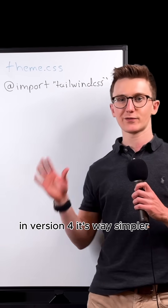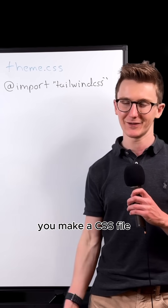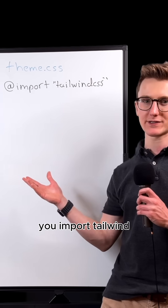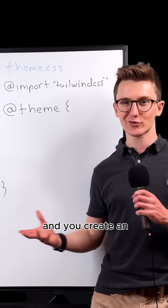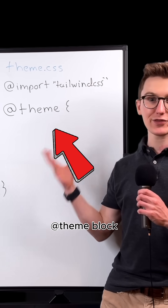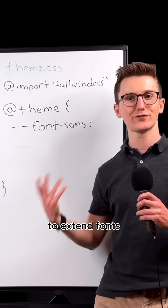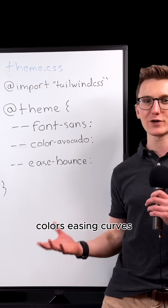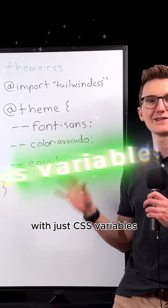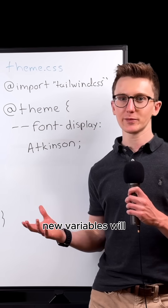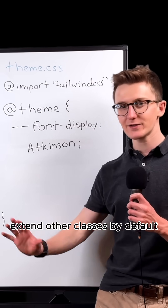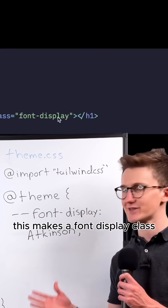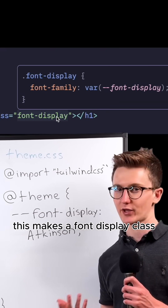In version 4, it's way simpler. You make a CSS file, you import Tailwind, and you create an @theme block to extend fonts, colors, and easing curves with just CSS variables. New variables will extend other classes by default. This makes a font-display class.